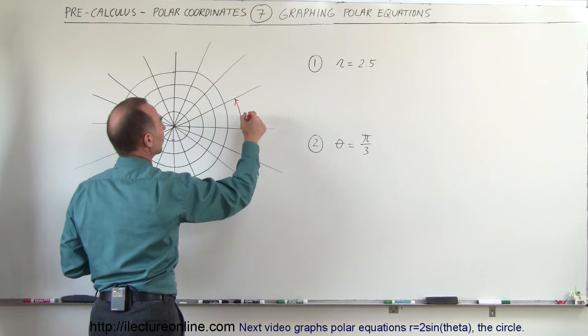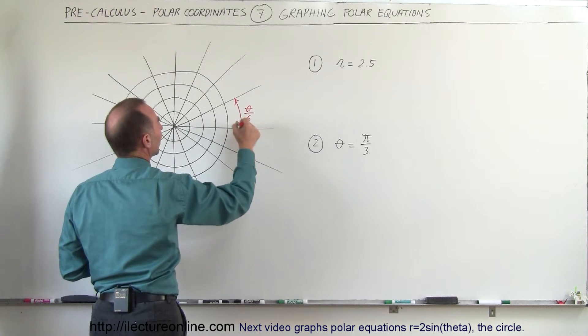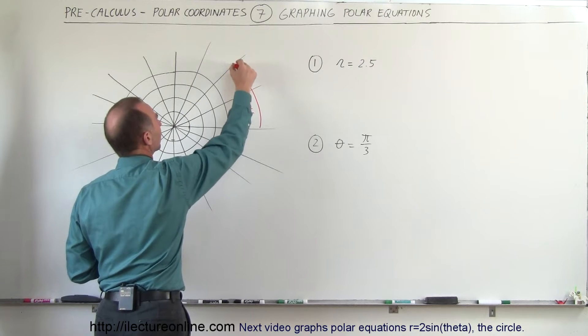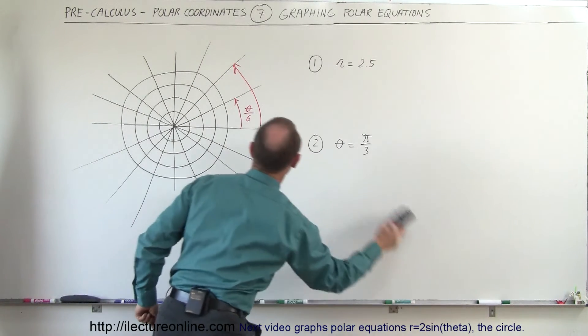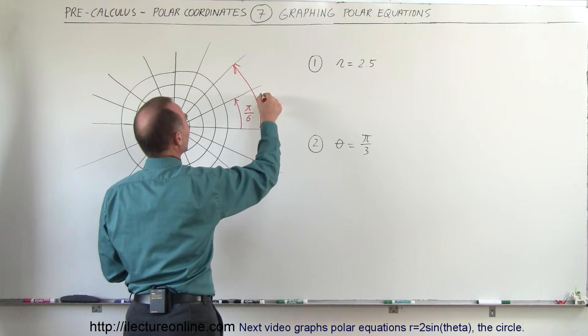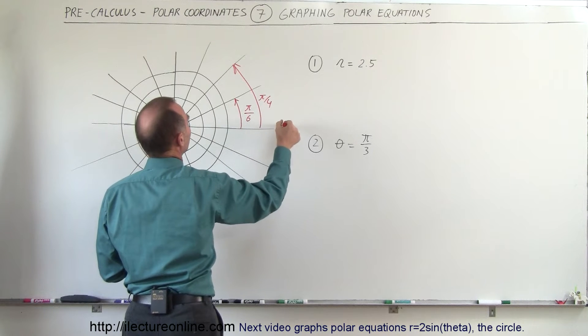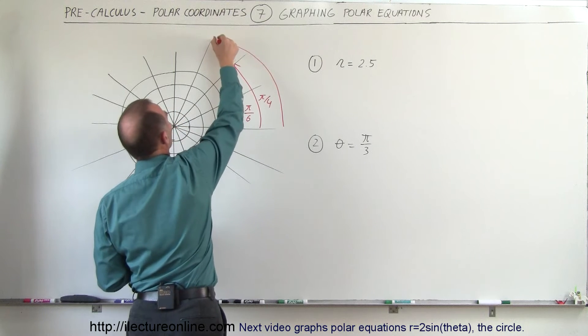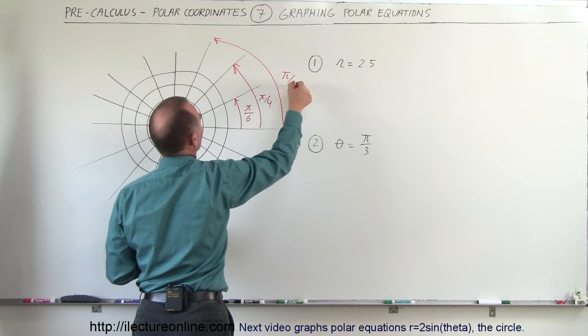So this angle right here could be considered to be theta divided by 6... oh not theta but pi. Let me correct that. What I meant to say was pi divided by 6, this would be pi divided by 4, and then this angle right here would be considered pi divided by 3 and so forth.